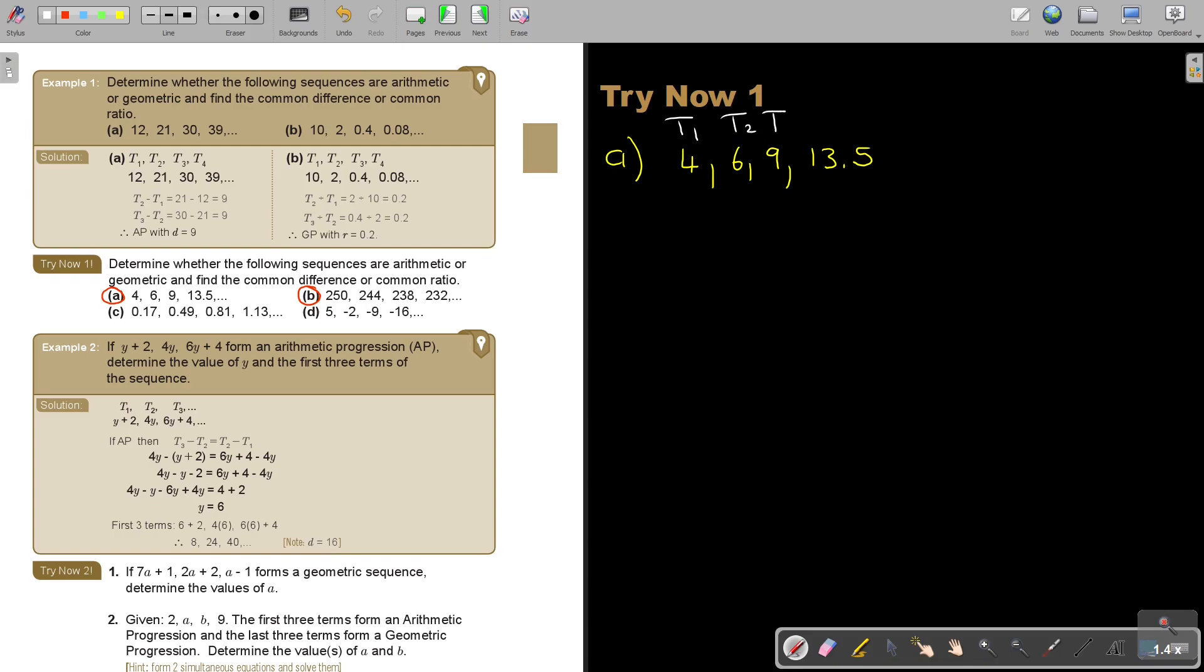So, let's just do T2 divide T1, equals T3 divide T2. So, that's 6 divide 4, is equal to 9 divide 6. Because, 2 can go in 3, can go in 2. 3 can go in 3, can go in 2. So, therefore, it is a GP.